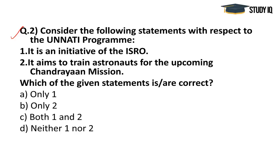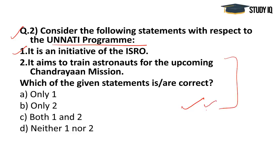There's a question for you — attempt it and comment in the comment section. Consider the following statements with respect to the UNNATI program: Statement 1 — it is an initiative of ISRO; Statement 2 — it aims to train astronauts for the upcoming Chandra missions. Which of the given statements is correct — only one, only two, both one and two, or neither? We'll discuss the answer at the end of the lecture.